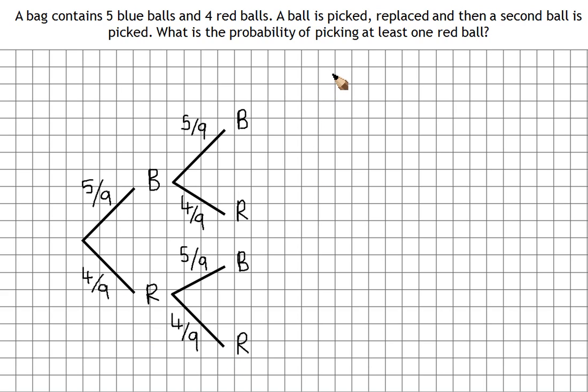Now if I want the probability of blue and red, we've got to remember that 'and' in probability means that we multiply probabilities. So that's going to be looking along this branch here.